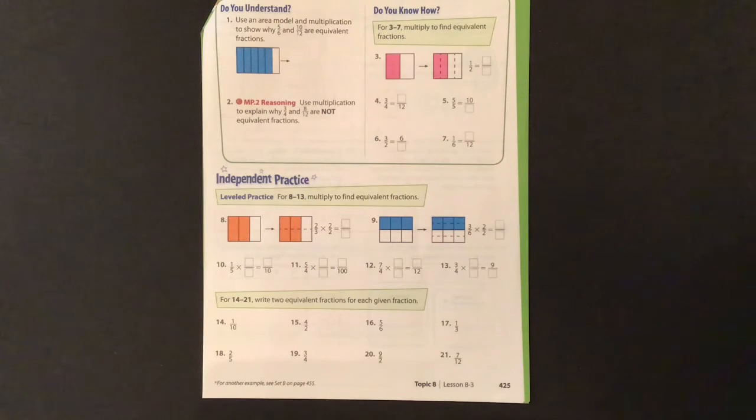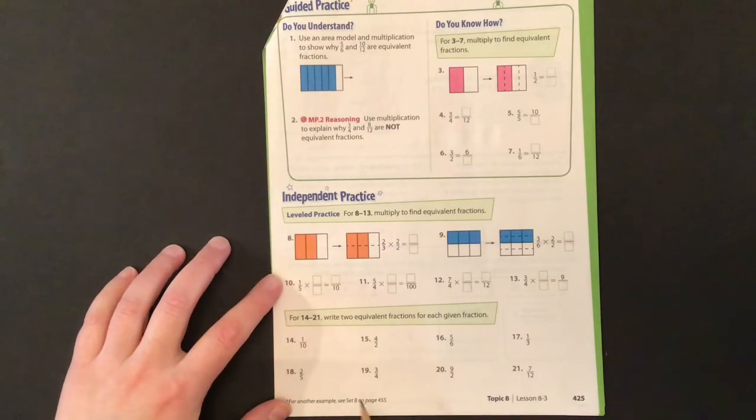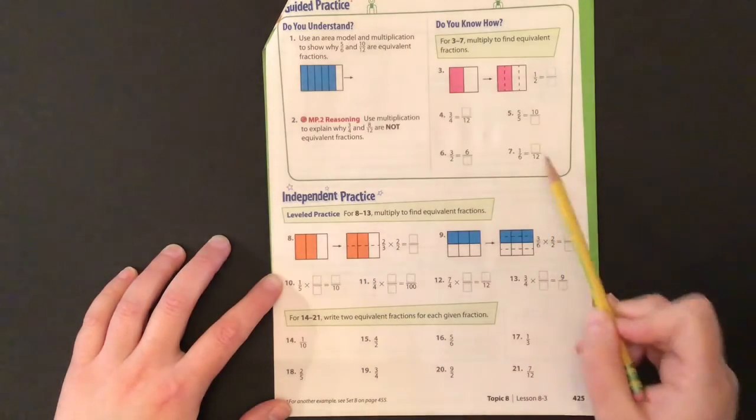So I have today's packet open to page 425. I think this packet is a little bit backwards, so I would suggest we start at 14 and go through 21, and then we can come back up to here and figure out what they're asking us to do.